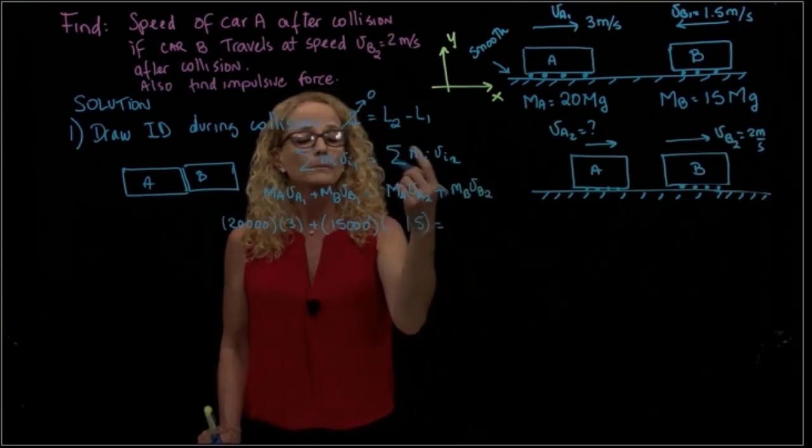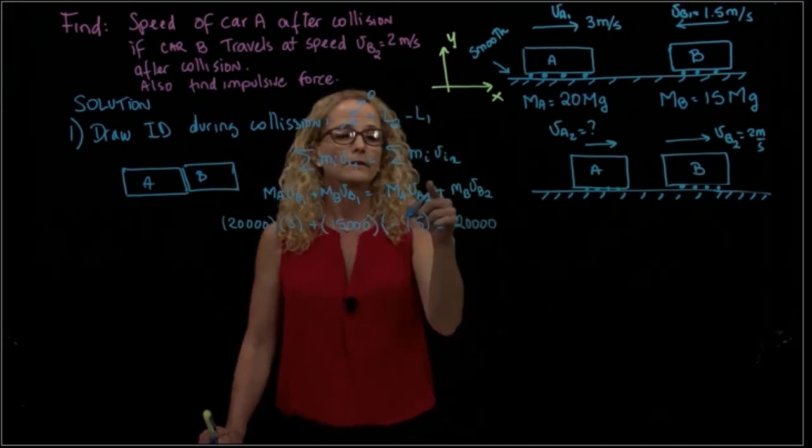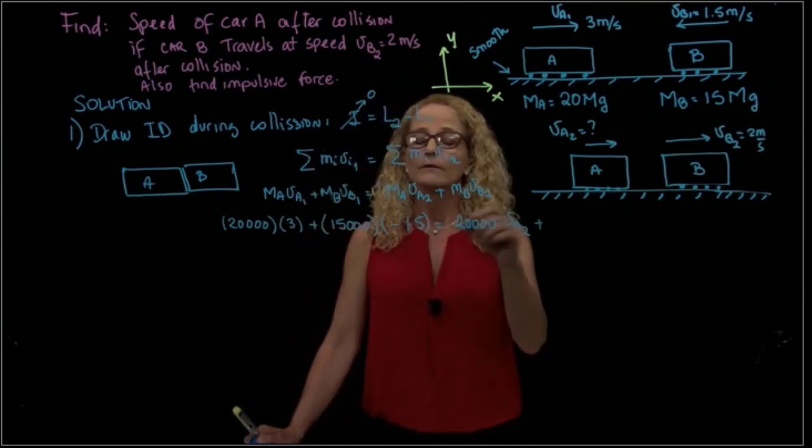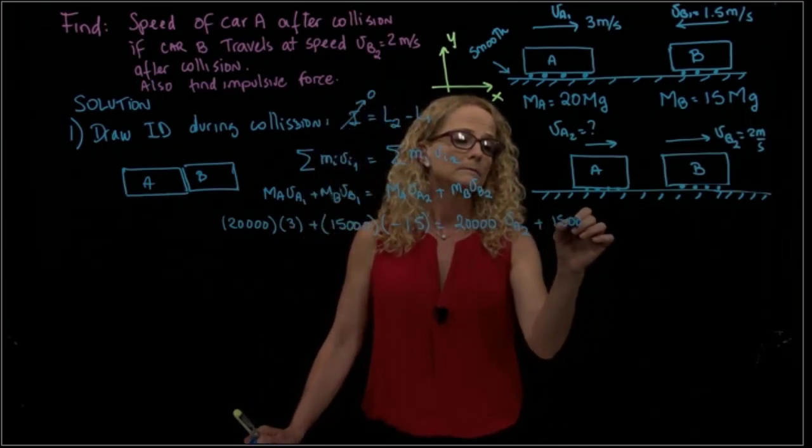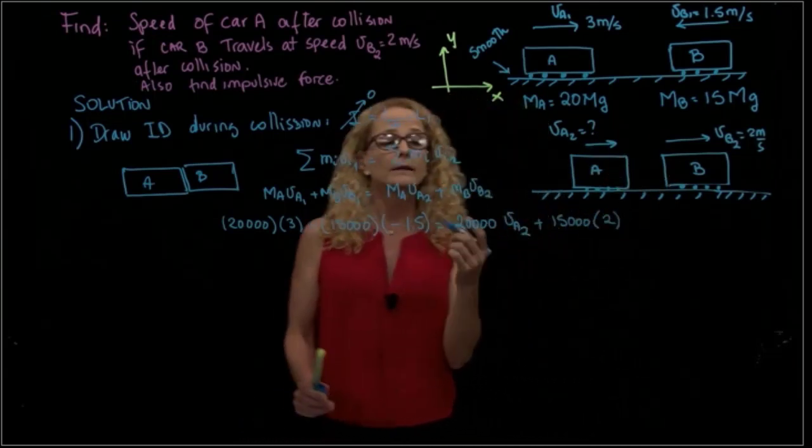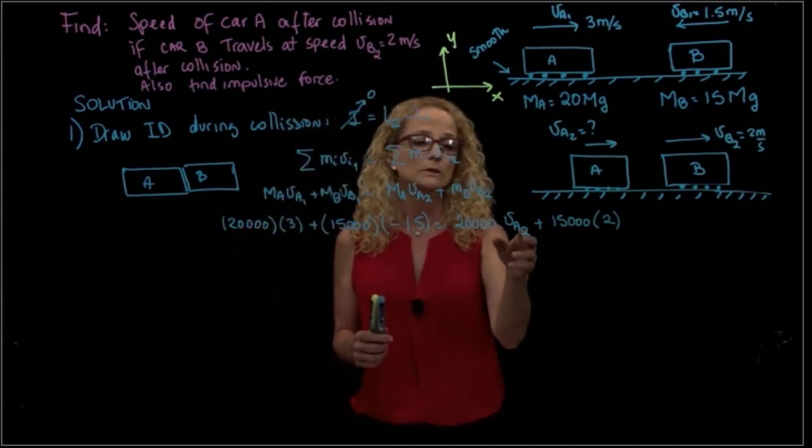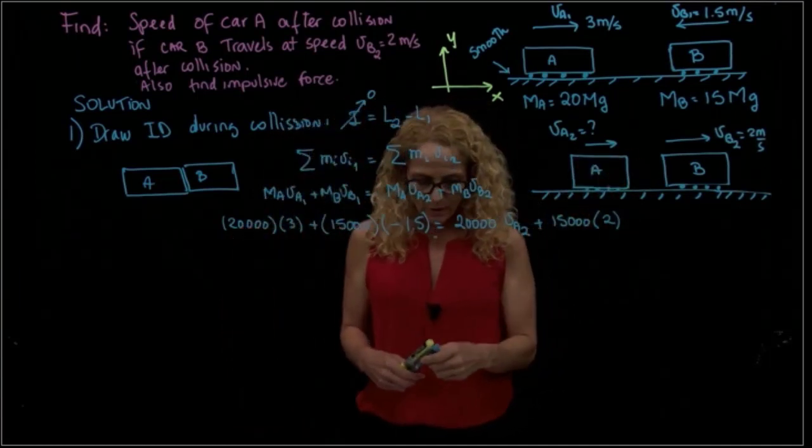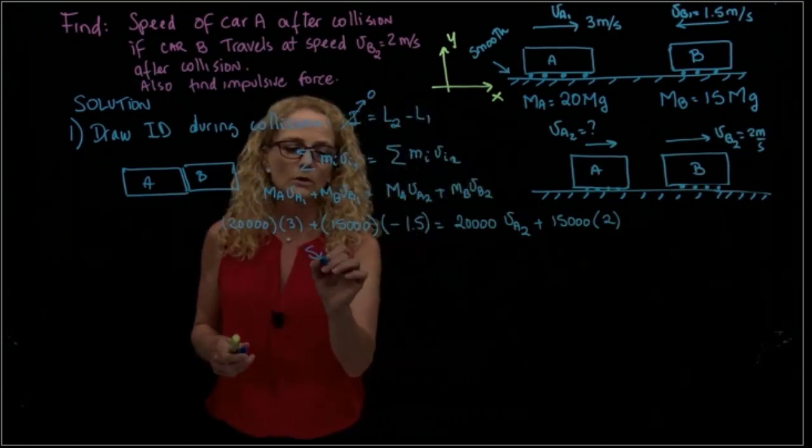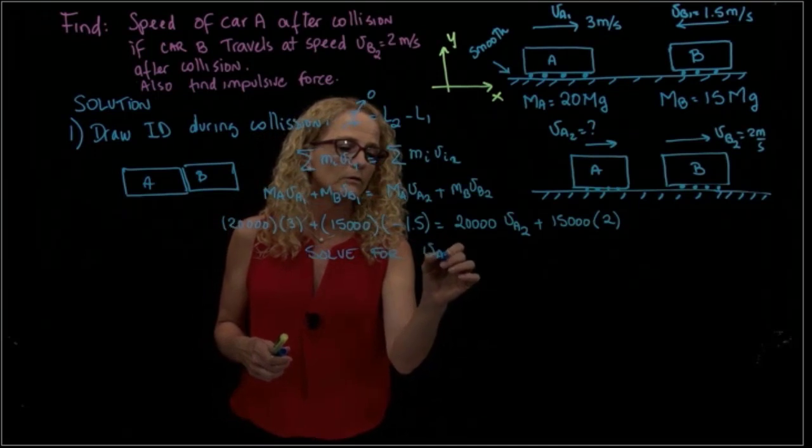And that equals 20,000 times velocity A2, which is unknown, plus 15,000 times the velocity of B, which is positive 2. As I said, the only unknown here is the final velocity of car A after collision, so I can solve for that velocity. Let me solve for velocity A2.